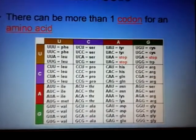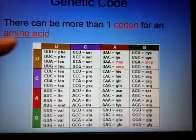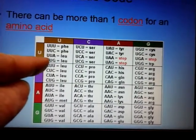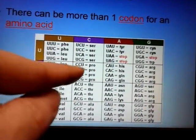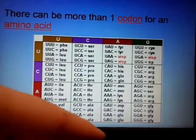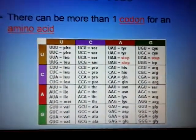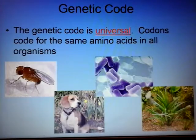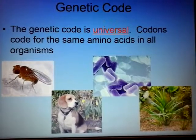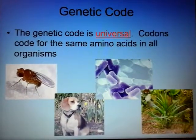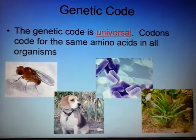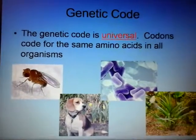There can be more than one codon for an amino acid — UUU and UUC both code for the same thing. Look at how many codons mean leucine. The genetic code is also universal: all codons code for the same amino acids in all organisms. Whether you're a bacterium, a virus, a dog, or a cat — AAA always means the same thing.